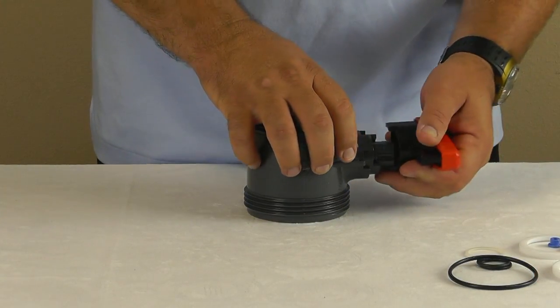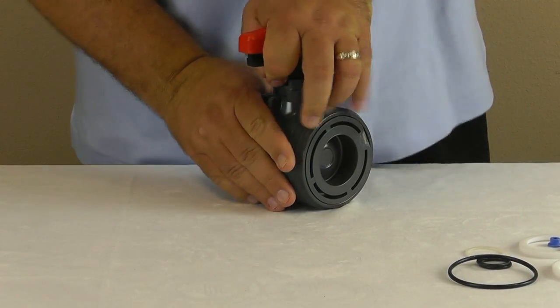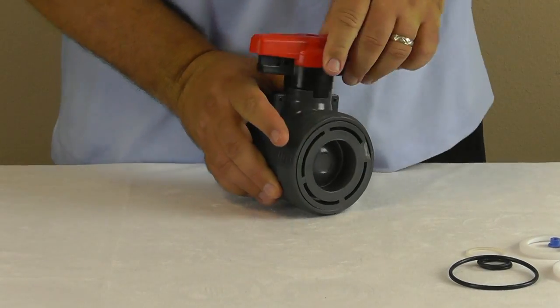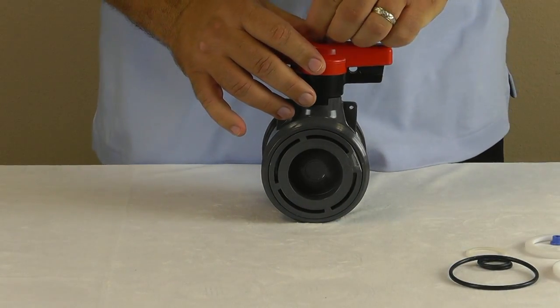Next, slide the handle lock onto the handle and press the handle down firmly onto the stem. Secure with the retaining screw and replace the blue handle cap.